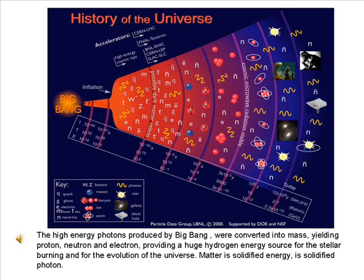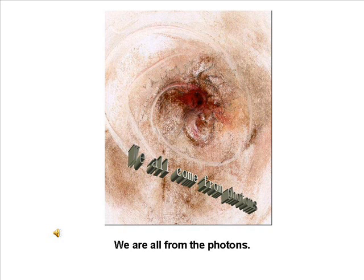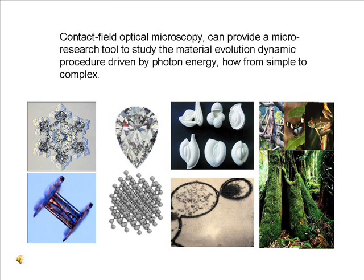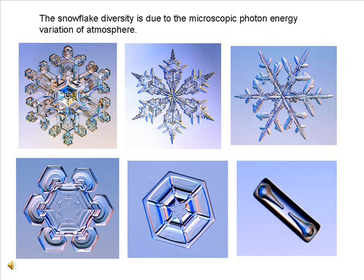The high-energy photons produced by the Big Bang were converted into mass, yielding protons, neutrons, and electrons, providing a huge hydrogen energy source for stellar burning and for the evolution of the universe. Matter is solidified energy — solidified photon. We are all from the photons. Contact Field Optical Microscopy can provide a micro research tool to study the material evolution dynamic procedure driven by photon energy, from simple to complex.